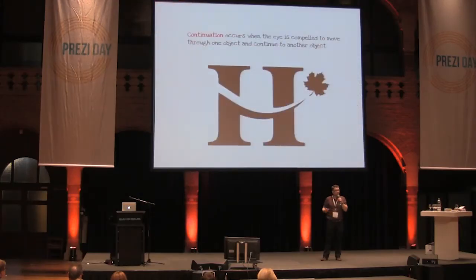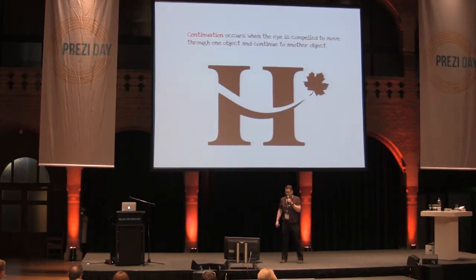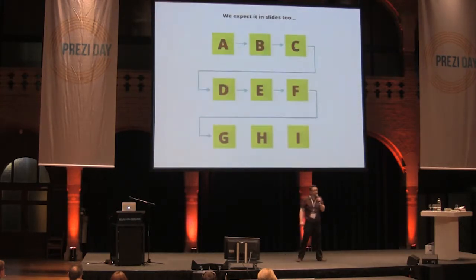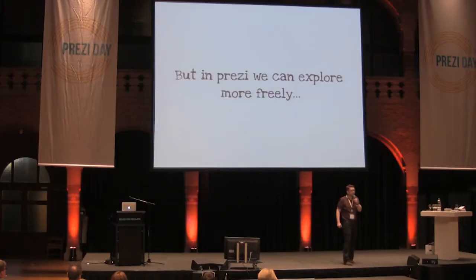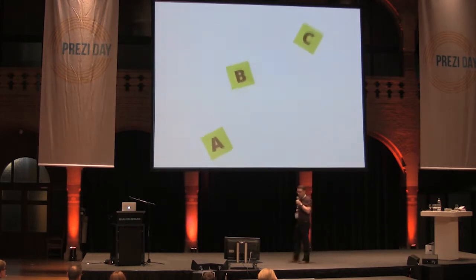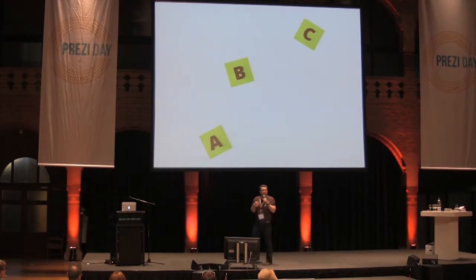We see it a lot in actual graphics and logos — this is a gestalt theory of continuation, where the H leads the eye into the maple leaf. We expect it when we look at slide designs too, or when we read books. In the Western world, we all grew up reading information from left to right, top to bottom. But in Prezis you can do crazy things — you can spin around like a maniac — so if you are going to break that convention, it's really important to indicate the flow at the overview.